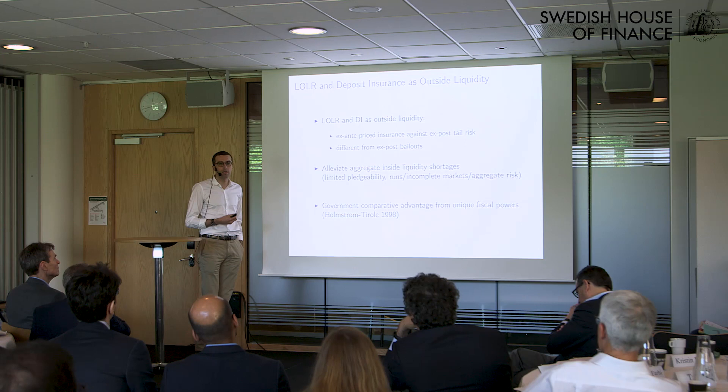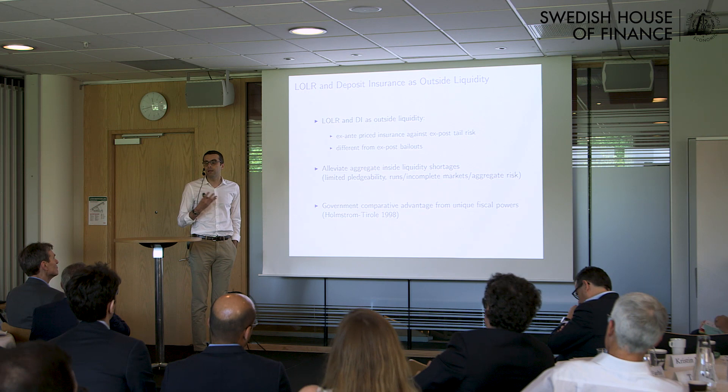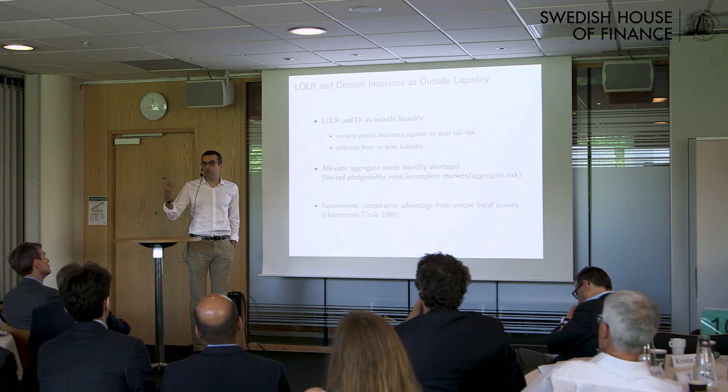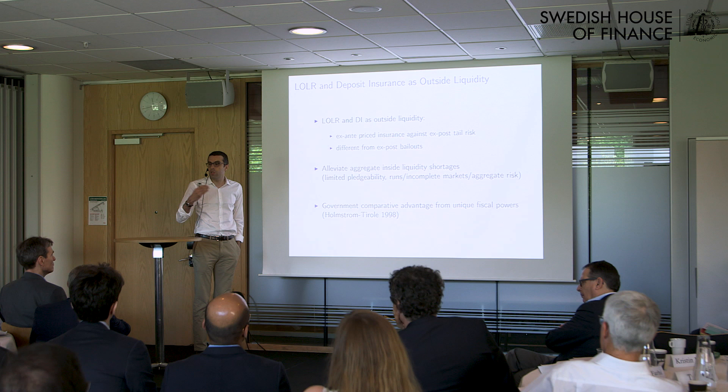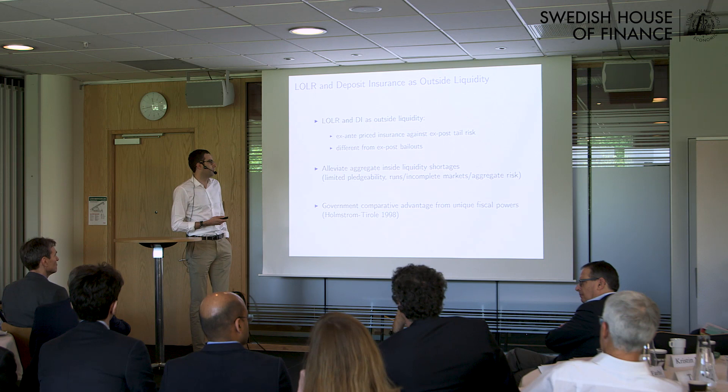Let me take an example from a different context. Think about intergenerational risk sharing. It's almost impossible for present and future generations to share risk together because future generations cannot participate in financial markets to insure risk that would materialize in the meantime. But the government can tax future generations in a state-contingent way and provide transfers to operate this risk sharing, overcoming these shortage problems by mobilizing its fiscal capacity.